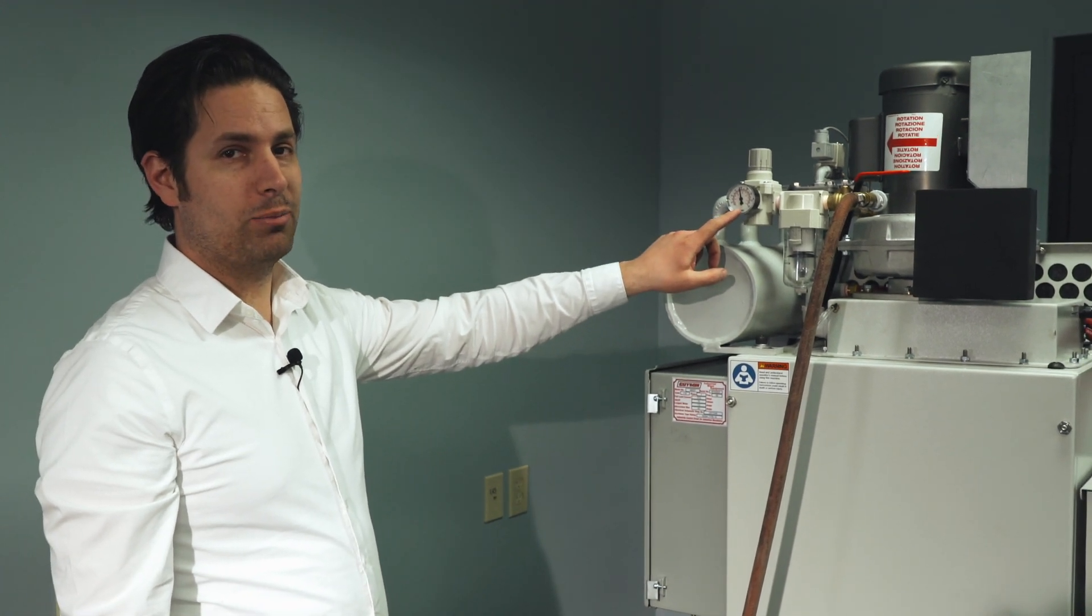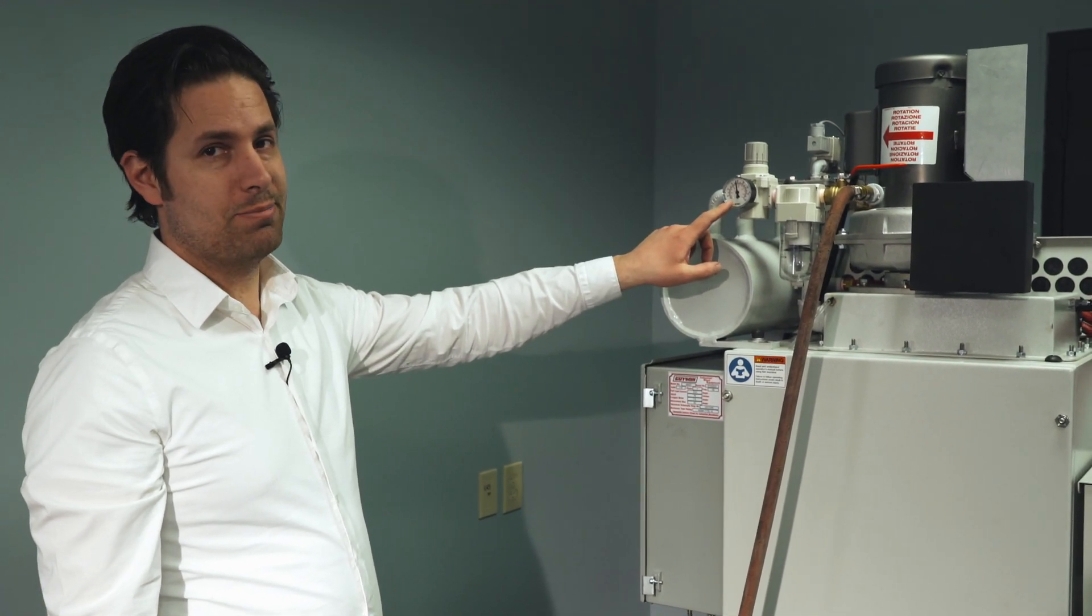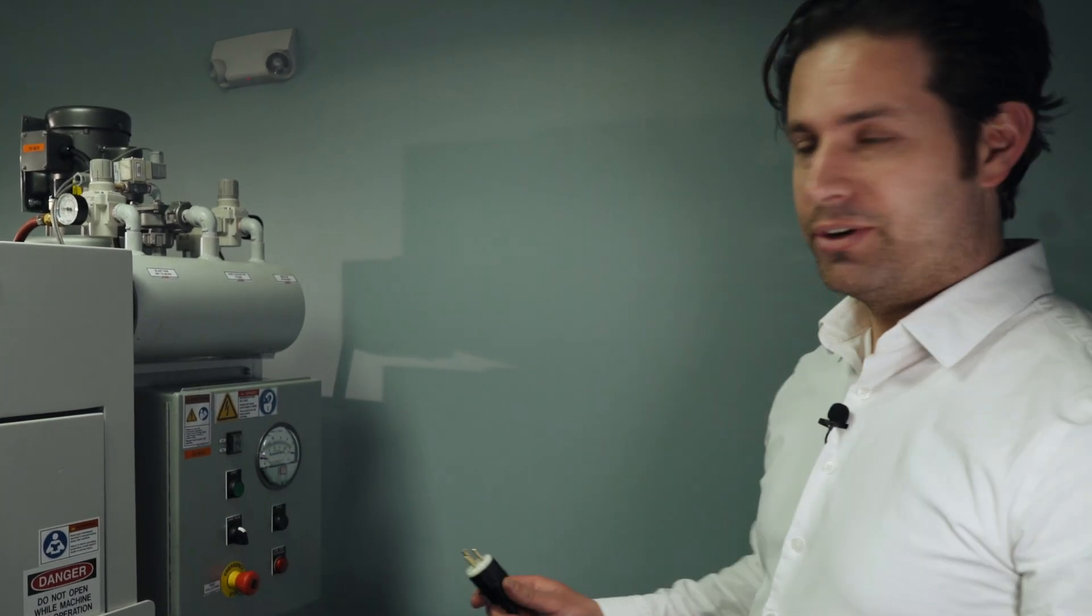The gauge here reads your incoming air pressure. This should be set to 80 PSI. Make sure the unit is in the off position, then you can plug your unit into the wall.